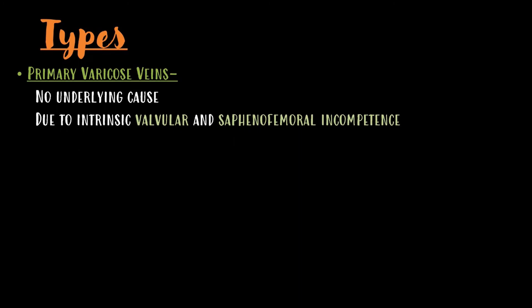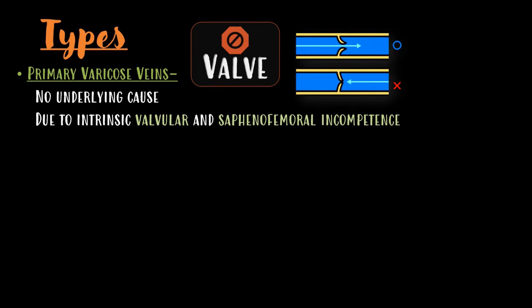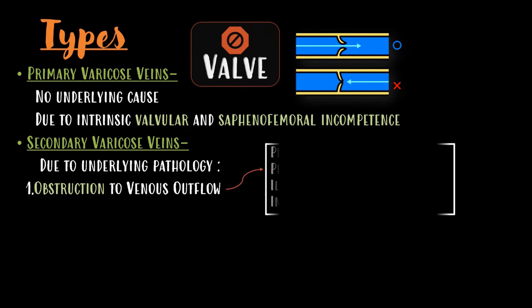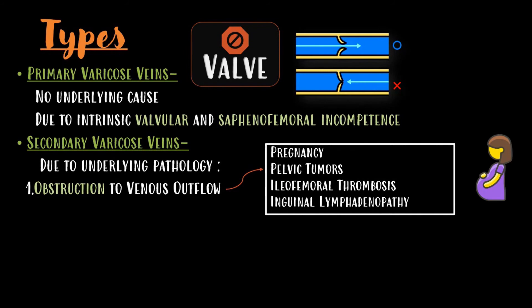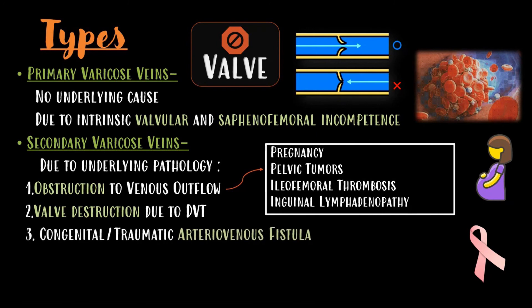Based on their etiology, varicose veins are divided into primary and secondary types. Primary varicose veins have no underlying cause and may be due to intrinsic valvular and saphenofemoral incompetence. Secondary varicose veins occur due to some underlying pathology, such as obstruction to venous outflow caused by pregnancy, pelvic tumors, iliofemoral thrombosis, or inguinal lymphadenopathy. Other pathologies include valve destruction due to DVT, or congenital or traumatic arteriovenous fistula.